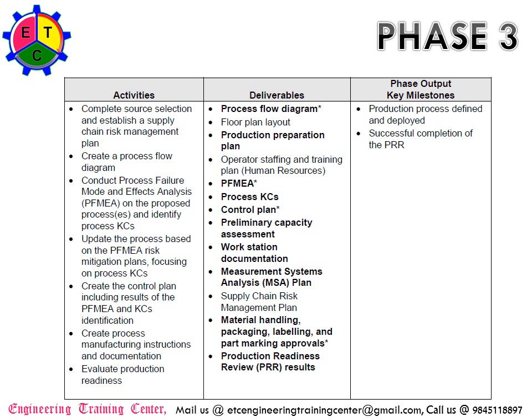The major activities here are completing source selection and establishing the supply chain risk management plan — addressing whether we have sufficient risk-free resources and where sourcing risks are addressed. During Phase 3, you will create the process flow diagram, and once that is in place, conduct the PFMEA on the proposed processes. You will identify the key characteristics within the PFMEA, and update the process based on the PFMEA risk mitigation plan focusing on those key characteristics.